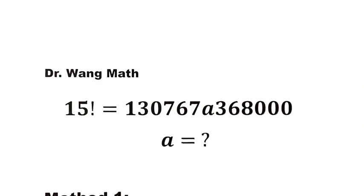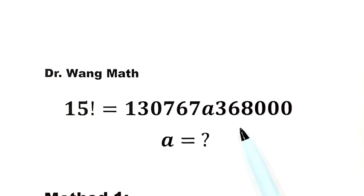In this video, we'll be solving this question from the Taiwan International Mathematics Contest. 15 factorial equals this number, but one digit is unknown, represented by a. Then what is the value of this digit a?